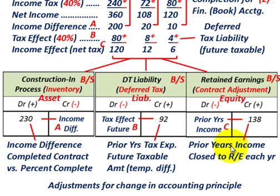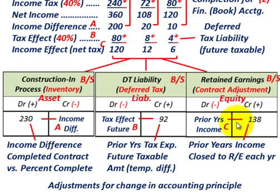Prior years' income is closed to retained earnings each year — income from each year goes to the income statement and then transfers to retained earnings. By recognizing greater income under the percentage of completion method, we credit retained earnings for $138,000. This accounts for the cumulative income net of tax recognized across years X1, X2, and X3 when switching from the completed contract method.